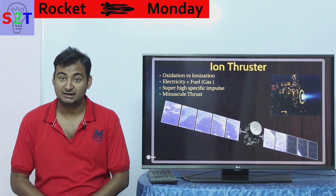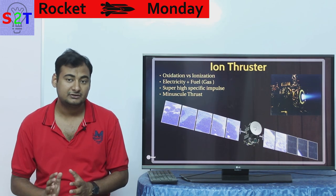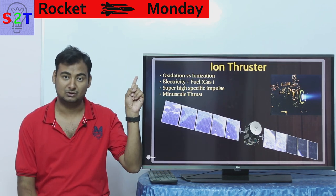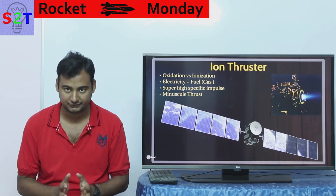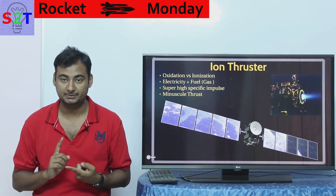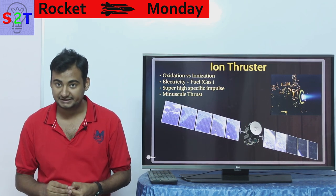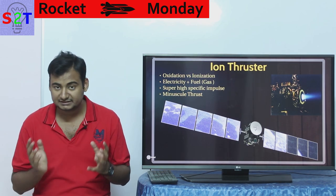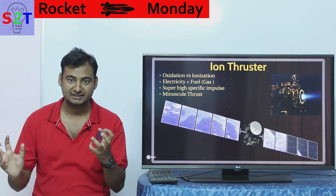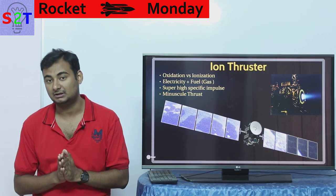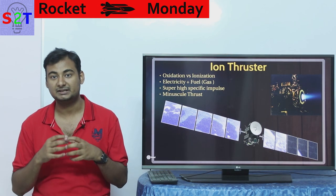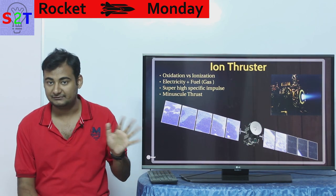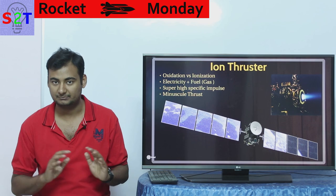To understand ion propulsion, you need to know that every big rocket that gets things off the ground relies on what we call oxidation — basically burning the fuel. Fuel could be anything: RP-1 (kerosene), methane, liquid hydrogen, or nitrous oxide. All we are doing is taking a fuel, mixing it with oxygen — that reaction is called oxidation — and using the released chemical energy to get our thrust. This is common in every rocket, be it solid booster, liquid booster, or hybrid.